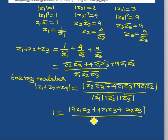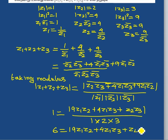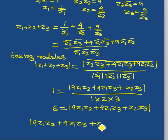Z2 value is equal to 2, Z3 value is equal to 3, so 1, 2, 3 multiply equals 6. 6 is equal to minus of 9Z1Z2 plus 4Z1Z3 plus Z2Z3. Therefore, modulus of 9Z1Z2 plus 4Z1Z3 plus Z2Z3 is equal to 6.